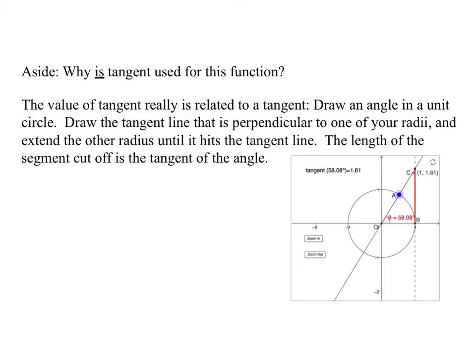As a really quick aside, why is tangent used for this function? The value of tangent really is related to a tangent. Draw an angle in a unit circle. Draw the tangent line that is perpendicular to one of your radii, and extend the other radius until it hits the tangent line. The length of the segment cut off is the tangent of the angle. You can come up with similar definitions of sines and cosines, although they're less obviously related to the geometry that we usually teach now.